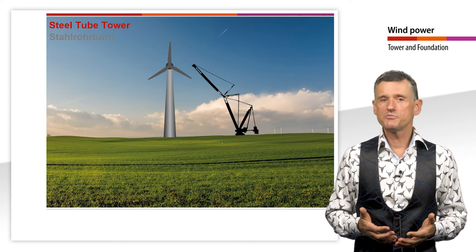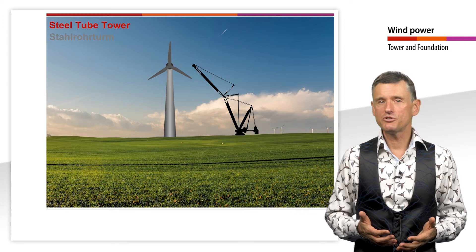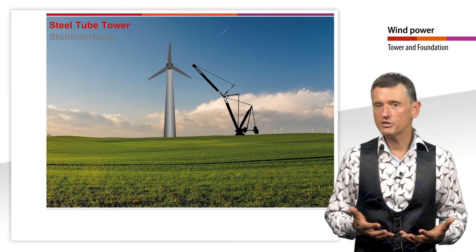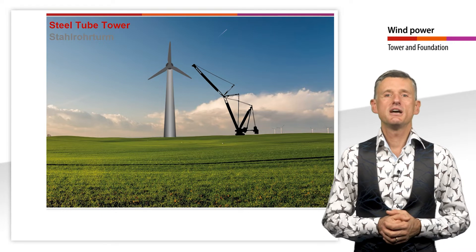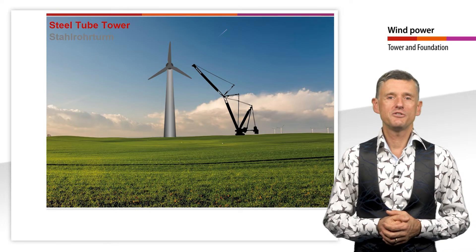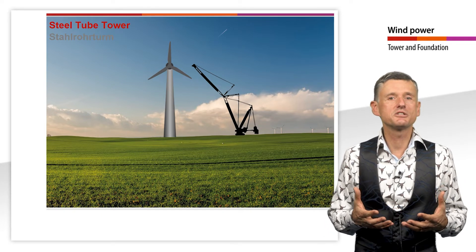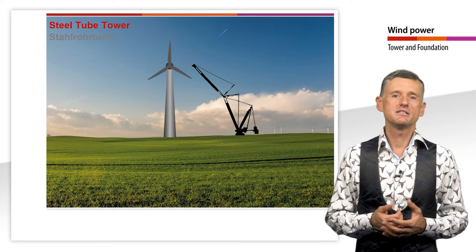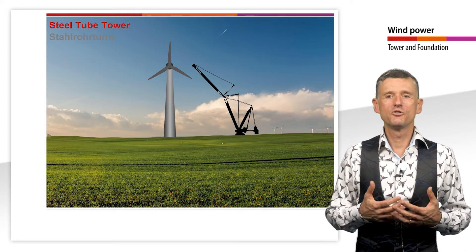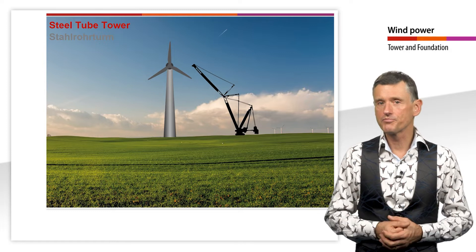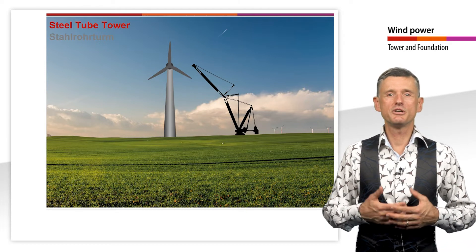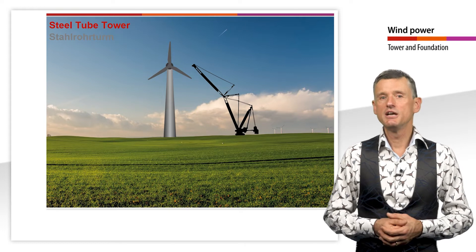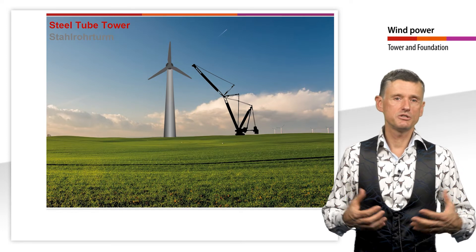The increasing problems in transporting lower tower sections with diameters of more than 4.5 meters have caused some manufacturers to build the tower sections from prefabricated longitudinal plates instead of rolled and welded plates. This results in a polygonal cross-section of the towers, and the elements are then bolted together.